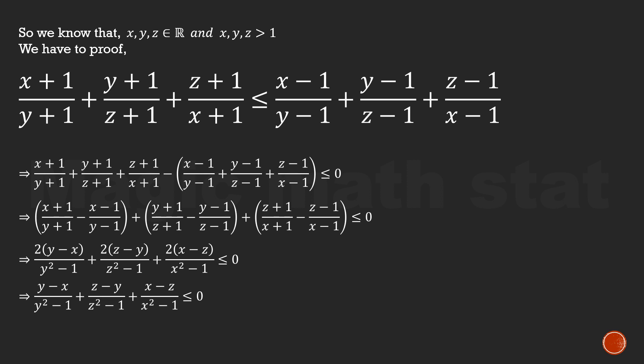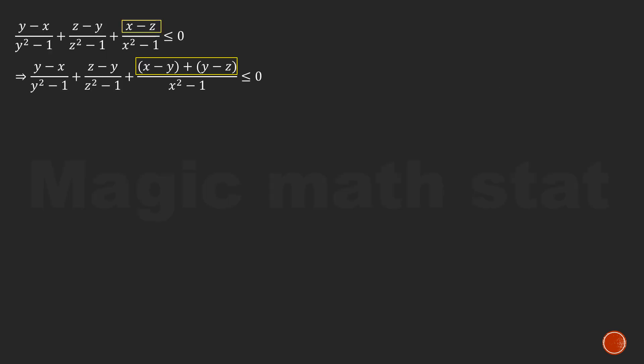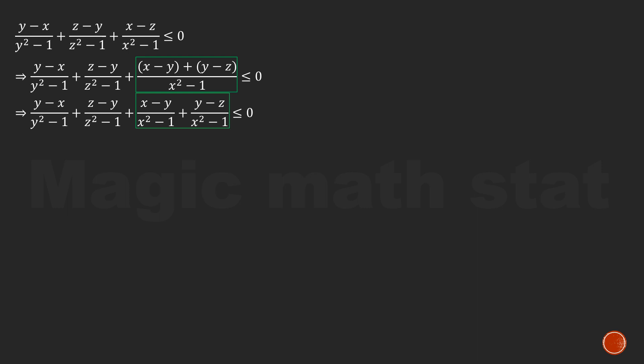Let's go to the next page and simplify further. We are going to break (x-z) into two parts: (x-y) plus (y-z). Since we added one y and subtracted one y, the expression (x-z) stays unchanged. Now we break that fraction into two parts: (x-y)/(x²-1) plus (y-z)/(x²-1). The rest of the inequality stays the same.